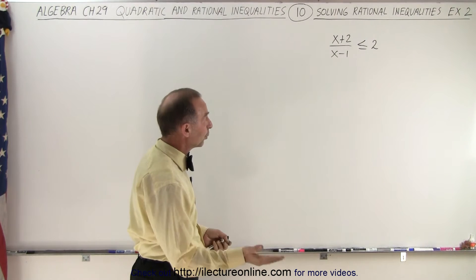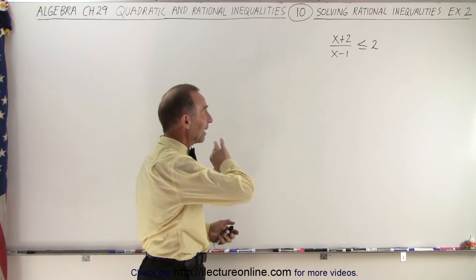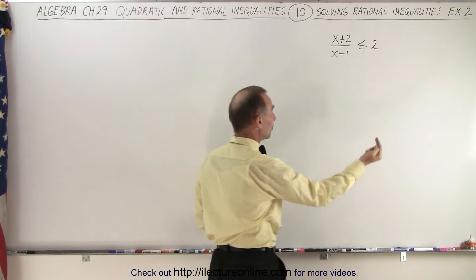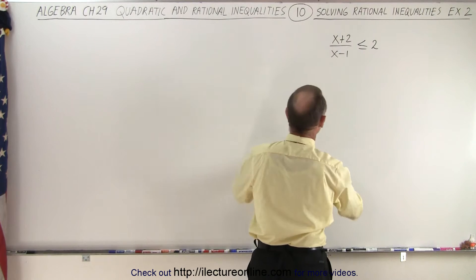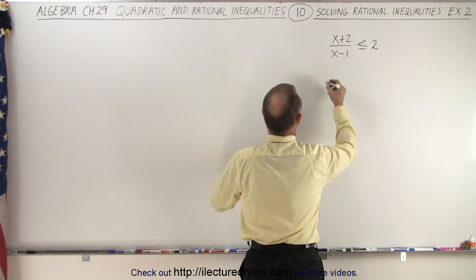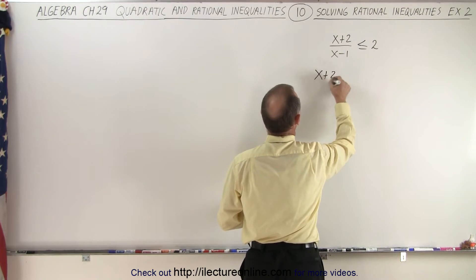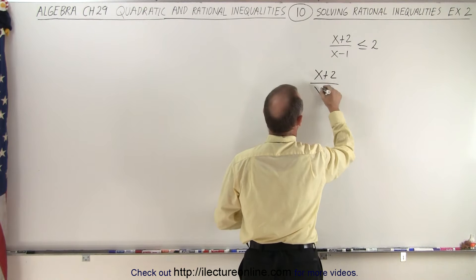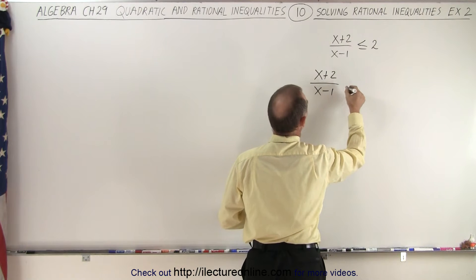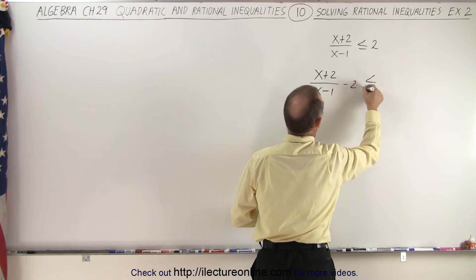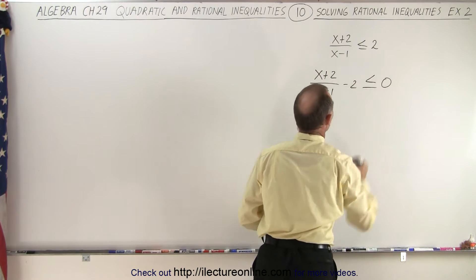The rule is to move everything over to one side and have a zero on the other side, so that two must move to the left. So we end up with (x+2)/(x-1) minus two, less than or equal to zero.